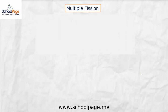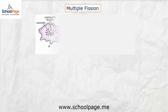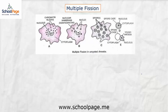Multiple fission is a kind of fission in which a single cell splits into many daughter cells. When conditions are unfavorable, amoeba undergoes multiple fission through cyst formation. You can observe here that the nucleus forms numerous chromatin blocks, the nuclear membrane disintegrates, and each nucleus becomes a spore. These spores germinate once favorable conditions return.